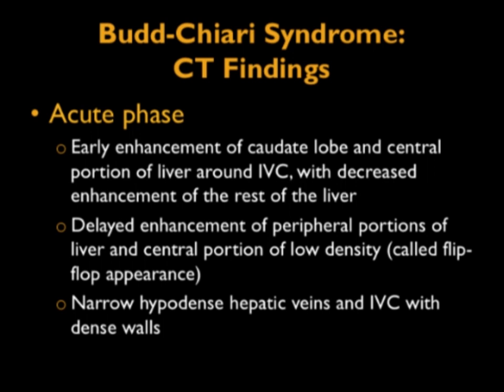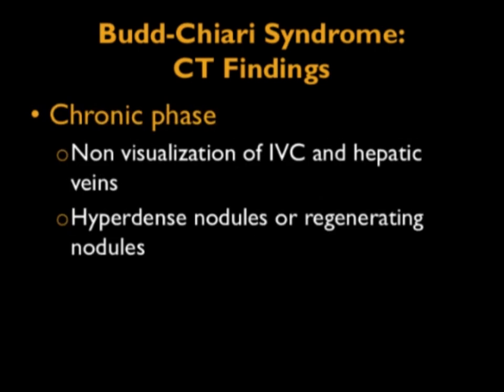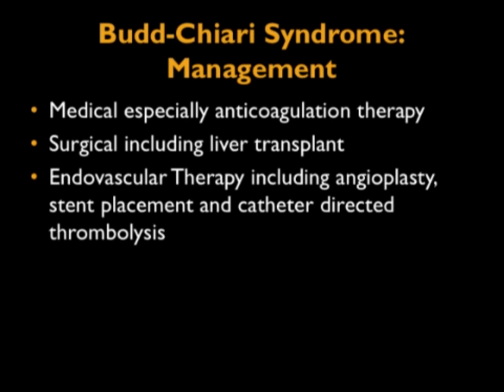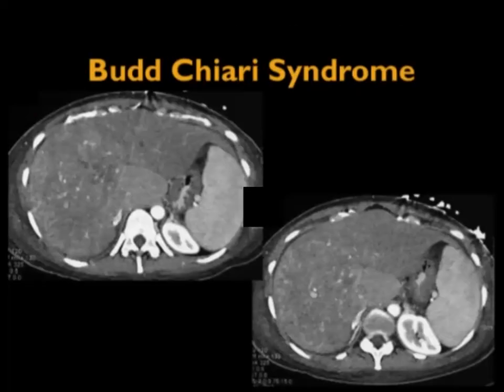In the chronic phase, there is non-visualization of the IVC and hepatic veins, and regenerating nodules are indeed going to be very common. Budd-Chiari is tough to manage. Medically, anticoagulant therapy is used. Surgery would include liver transplant. Endovascular therapy includes angioplasty, stent placement, and catheter-directed thrombolysis — with mixed results.